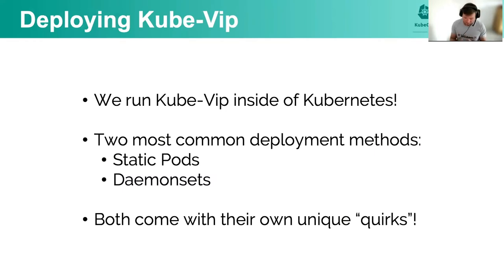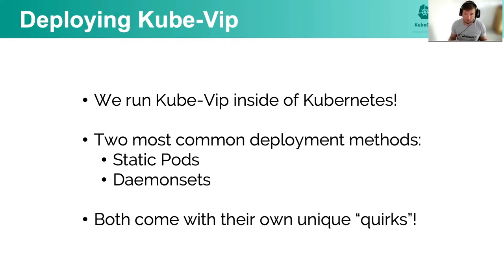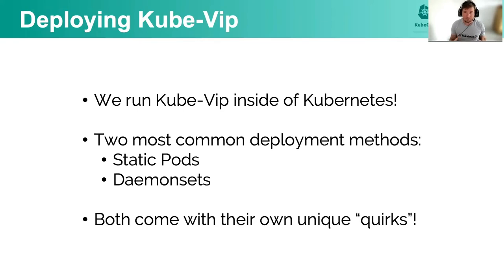We've discussed the clustering technologies and networking protocols that power KubeVIP. Using leader election as part of the Kubernetes API means that we actually run KubeVIP inside of Kubernetes now. Raft has largely been deprecated because it was deemed unstable. Now we run KubeVIP as a pod inside of Kubernetes, which connects to the API server and participates in leader election. There are two common deployment methods: either a static pod or a daemon set, and both come with their own unique quirks.